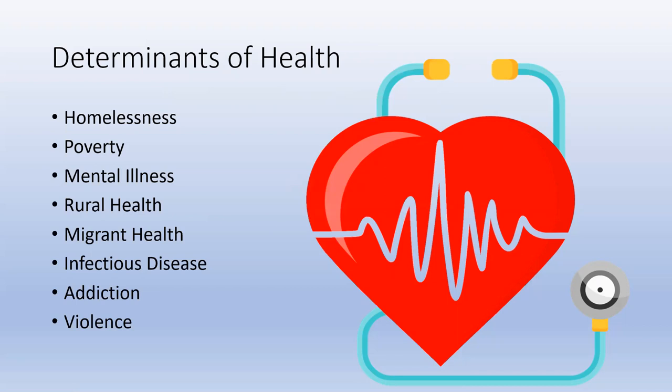Let me give another example of the determinants of health in regards to homelessness, infectious disease, and poverty. According to the National Health Care for Homeless Council, living on the streets or in shelters brings the risk of communicable diseases such as STDs or TB, as well as violence — both physical, sexual, and mental in nature — because of the crowded living conditions and lack of privacy or security. These are just a couple examples of how determinants are interrelated.